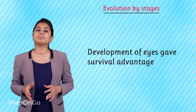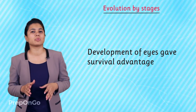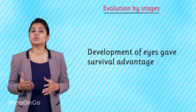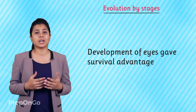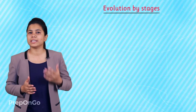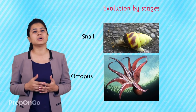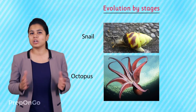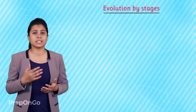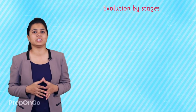The development of eyes gave a very good survival advantage to all organisms, and you might have observed eyes in various organisms like insects, octopus, and invertebrates — all of them have eyes. So evolution of eyes is an example of evolution by stages.